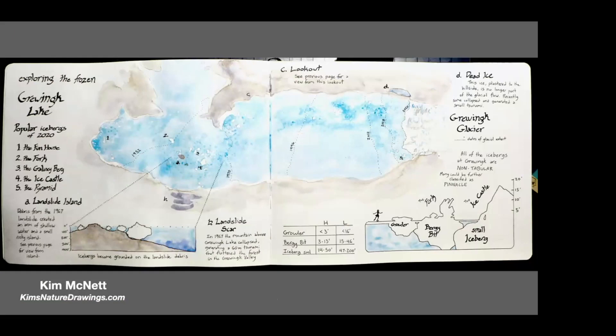This is a map of glaciers in the bay. She's put numbers and indicated names of icebergs, then drew side views of what they look like — where they were stuck on the shore and what they looked like underneath. One is called Growler, another Bergy Bit, another the Ice Castle. A very cool way to map what she's seeing in the landscape.